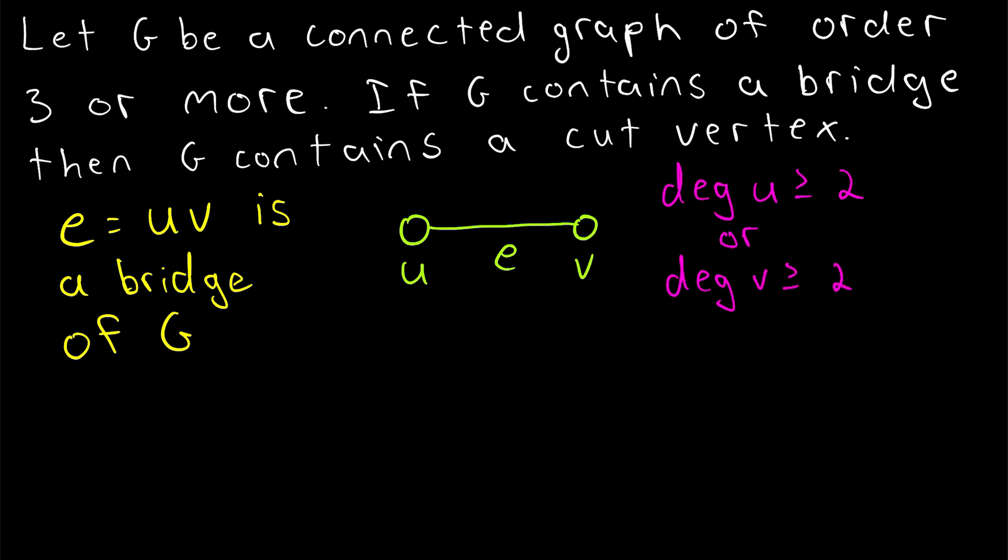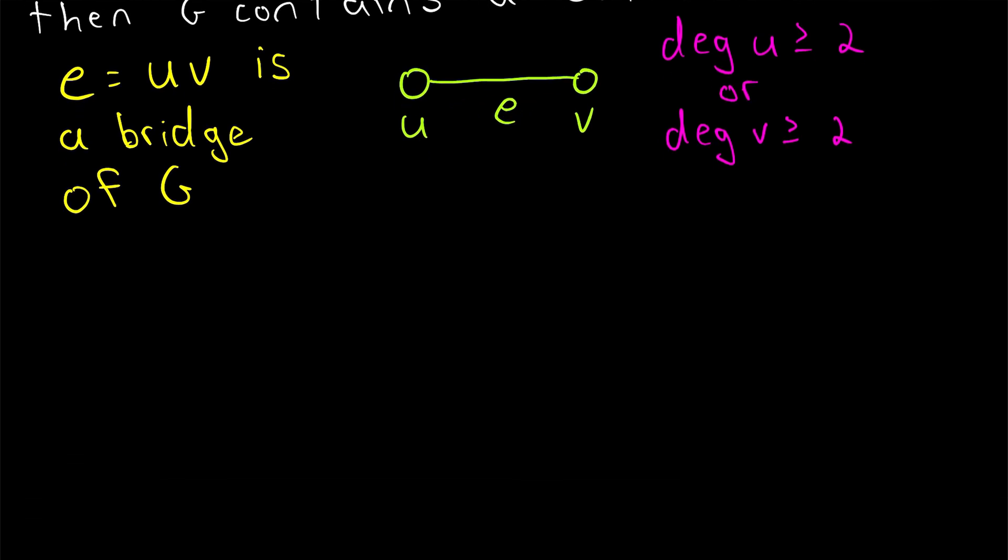As long as at least one of them has a degree greater than or equal to 2, that vertex will be a cut vertex. And again, that follows from the theorem I mentioned earlier. If the end vertex of a bridge has a degree greater than or equal to 2, then it is a cut vertex. So let's just go ahead and prove the claim.